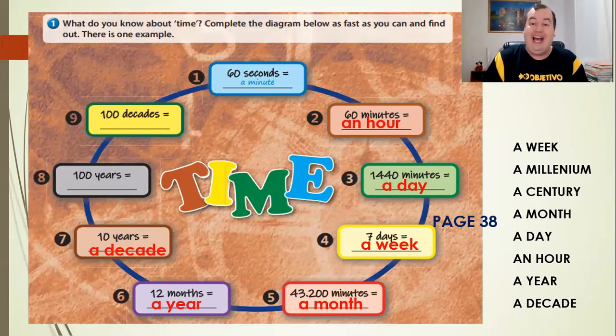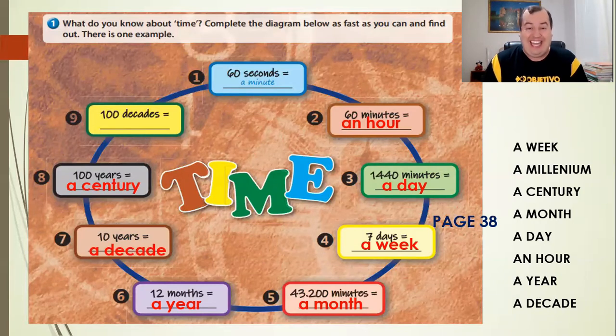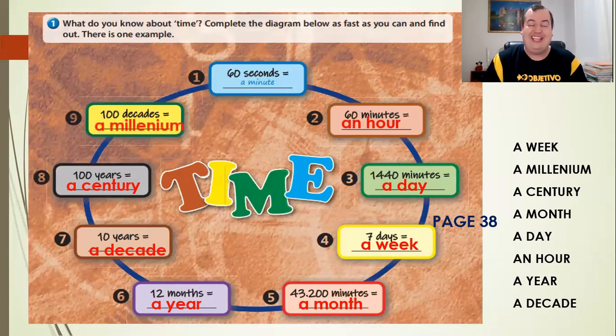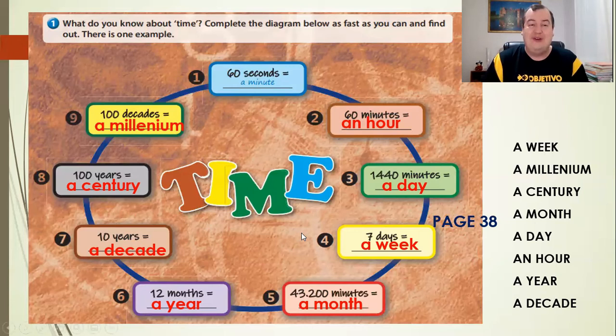And what about a hundred years? What is the right word for one hundred years? Ah-ha, one hundred years is a century. A century, a hundred years. And, wow, a hundred decades. A hundred decades. Nossa, quantos anos tem aí. So, a hundred decades is a millennium. So, if I have a millennium, we have a hundred decades. And, dessa maneira, a gente completou this diagram about time.